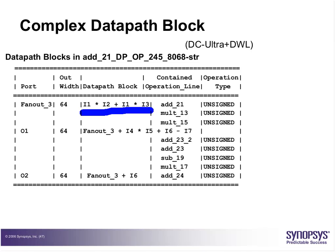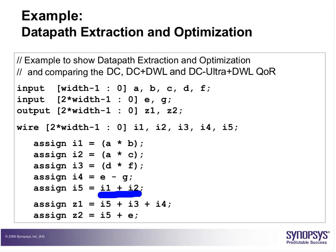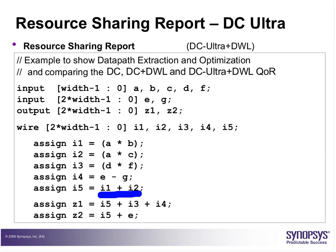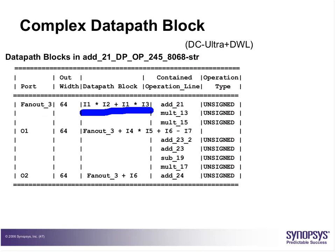O1 output is expressed as a function of the intermediate port plus further terms. O1 corresponds to Z1, which is i5 + ip + i4. O2 is equal to the intermediate port plus O2. So DC is able to use one intermediate output to compute both O1 and O2, the final outputs.